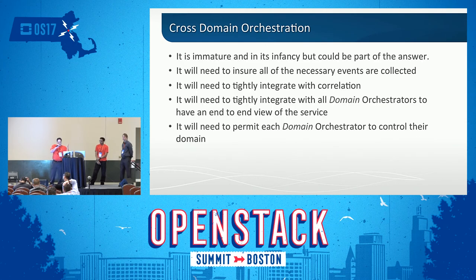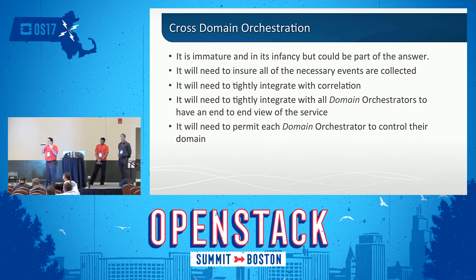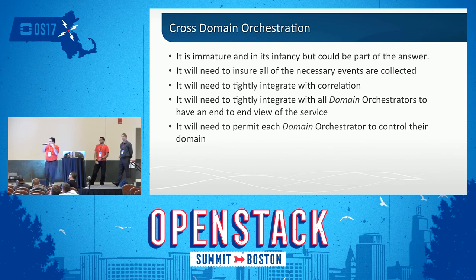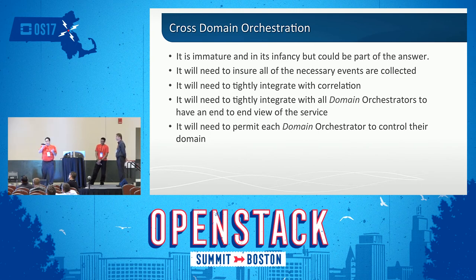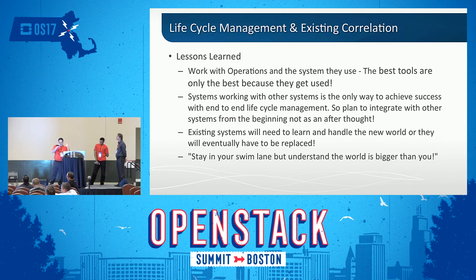So the question becomes: what do you do? One possible solution — if the cross-domain orchestrator functions the way it should, it will work across domains and have the view of the end-to-end service. But it can't be the one that fixes the problems — it just needs to direct the domain orchestrators to fix the problems. In order to do that right, it's going to have to be tightly integrated with all these domain orchestrators and tightly integrated with correlation. The domain orchestrators have to allow the cross-domain orchestrator to tell them what to do instead of just acting on their own. From a collection standpoint, we've learned that we don't always get all the information, and that's one thing that has to change.